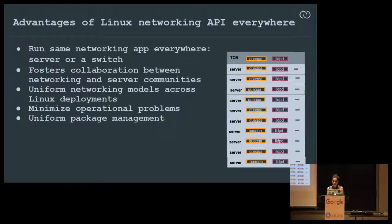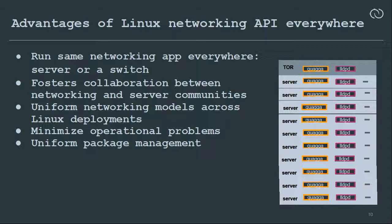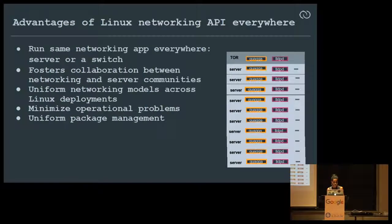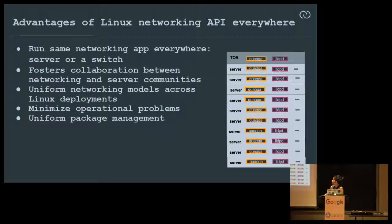The advantages of using the Linux networking API: the same applications — Quagga routing suite, LLDPD, DHCPD — run on your server, your switches, or any other network device. This brings the server and networking communities together with a uniform Linux networking model. You don't want to create a bond or bridge differently on a server versus a TOR — this unifies all networking. It minimizes operational problems; you can use the same monitoring and debugging tools everywhere. And package management is Debian everywhere.